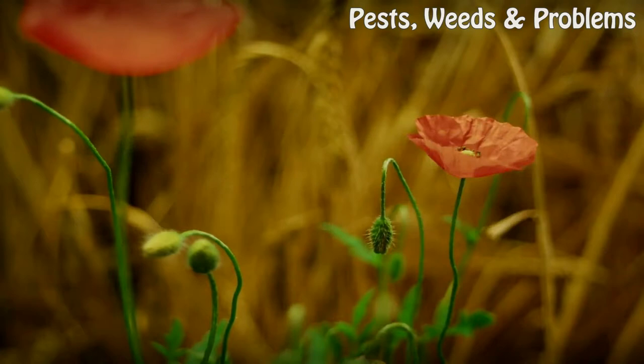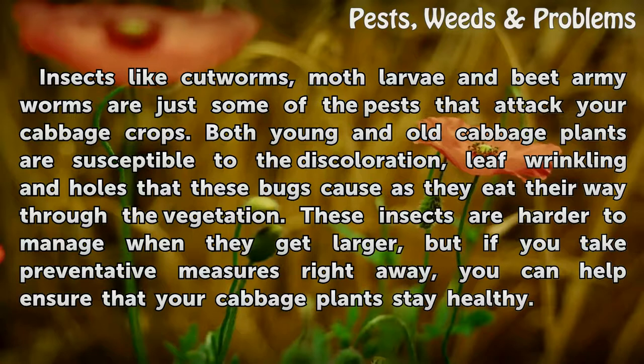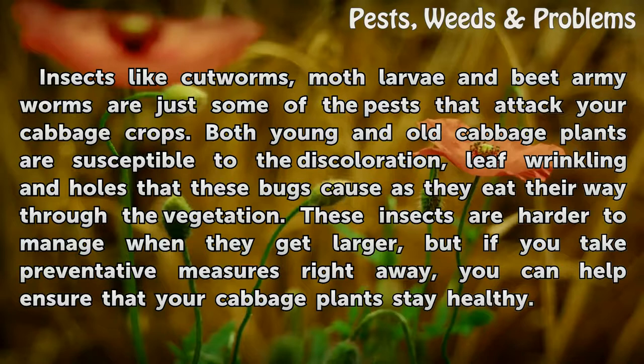How to Control Cabbage Pests. Insects like cutworms, moth larvae, and beet armyworms are just some of the pests that attack your cabbage crops. Both young and old cabbage plants are susceptible to the discoloration, leaf wrinkling, and holes that these bugs cause as they eat their way through the vegetation.